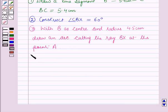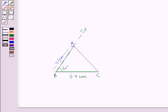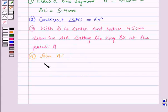Now, in the fourth step, join AC and by drawing AC, we can see we are getting a triangle ABC which is the required triangle. Therefore, triangle ABC is the required triangle.